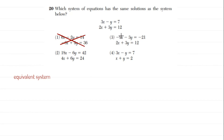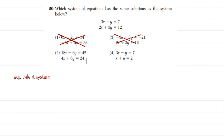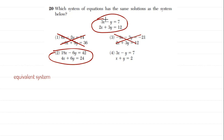For number three, they multiplied the first term 3x by negative three to get negative 9x, but multiplying negative y by negative three should give positive 3y — and that's not there. So number three is out. For number two: the first equation times six gives 18x minus 6y equals 42 — correct. The bottom equation multiplied by two gives 4x plus 6y equals 24 — also correct. So number two is equivalent: it looks completely different but has the same exact solutions.